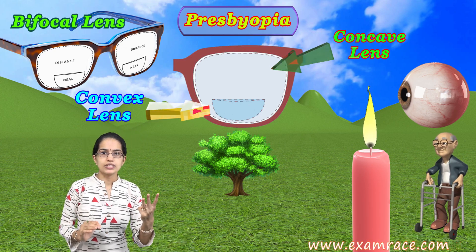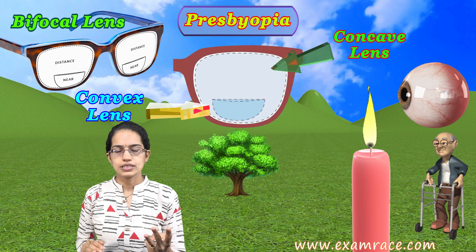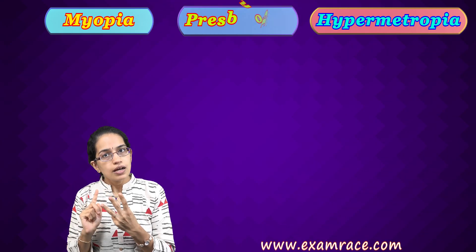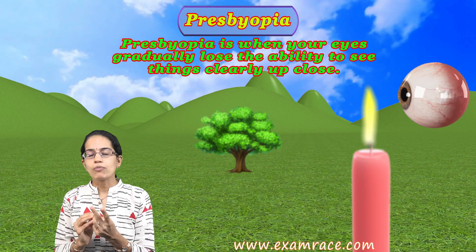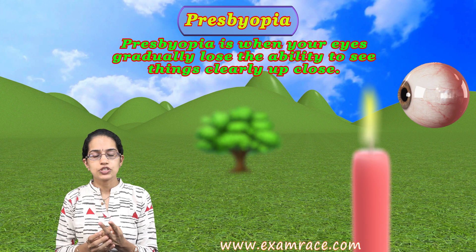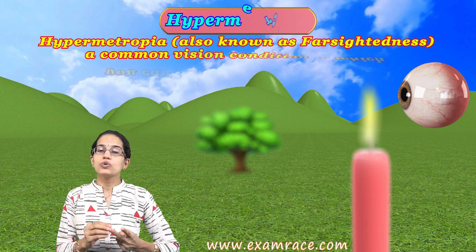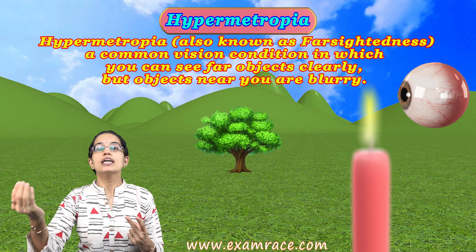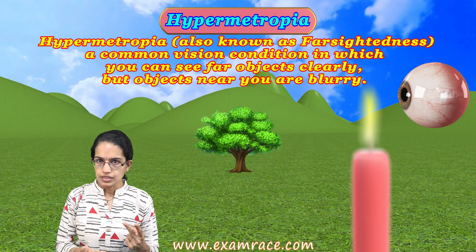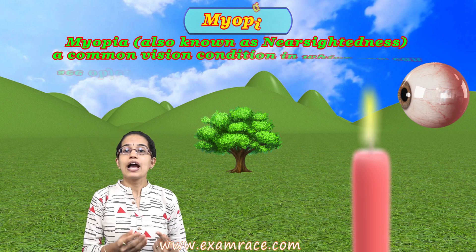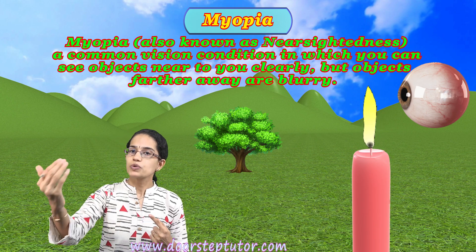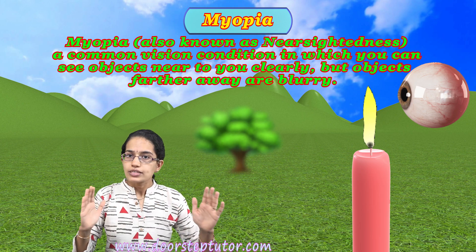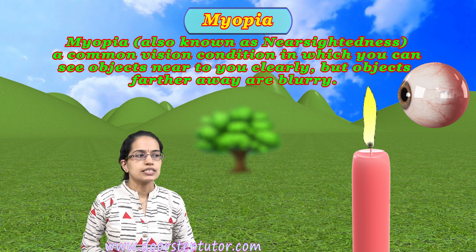These are the three major terms to understand: myopia, hypermetropia, and presbyopia. Presbyopia involves problems with both distant and near vision. Hypermetropia means clear distant vision but problems with near vision. Myopia means nearsightedness — clear near vision but problems with distant vision. Those are the various vision defects.